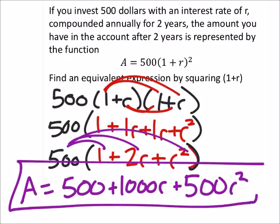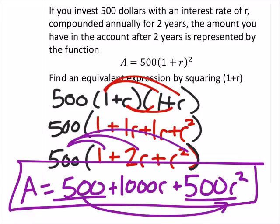There we go. If it wanted this in descending order, we'd just put this r squared in the front and move the 500 in the back using the commutative property of addition.